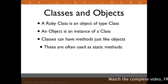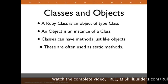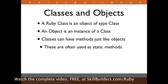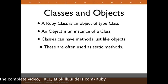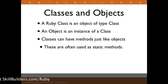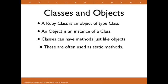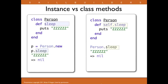When we talk about things in Ruby, we talk about classes and objects. In the classical sense, we think of a class as a blueprint for an object, but in Ruby everything is an object — nil is an object, true is an object, false is an object, and classes are objects. A Ruby class is actually an object of type Class, which means classes can have methods just like objects can. These are often used as static methods — we call them class methods in Ruby. So we end up with instance methods and class methods. We have a Person class with a `sleep` instance method, and to call it I need to create a new instance with `p = Person.new` and then call `sleep` on that instance.